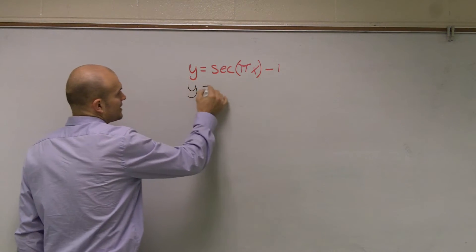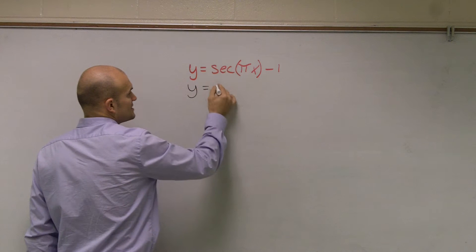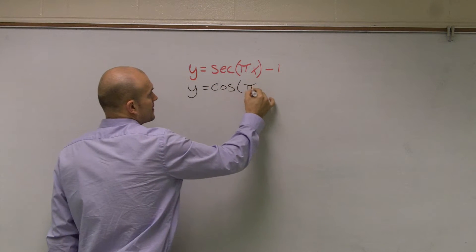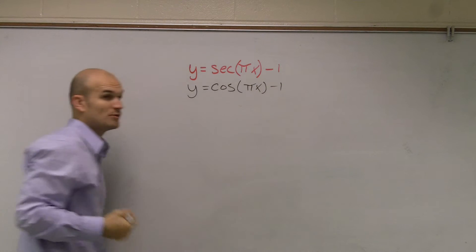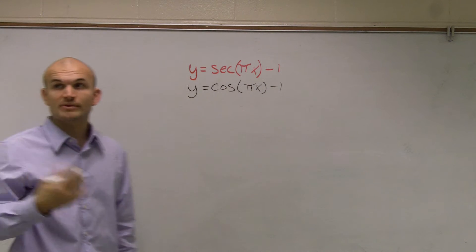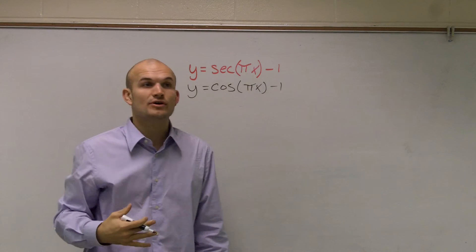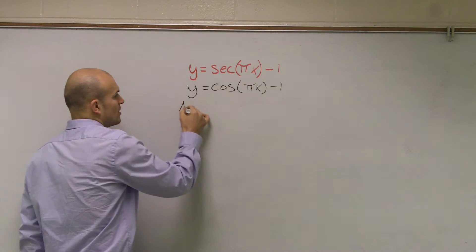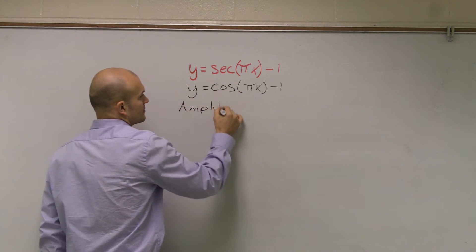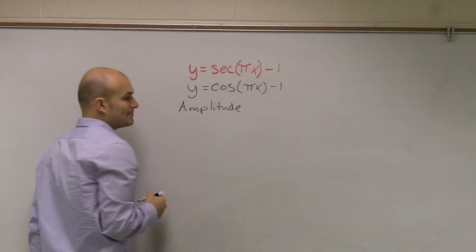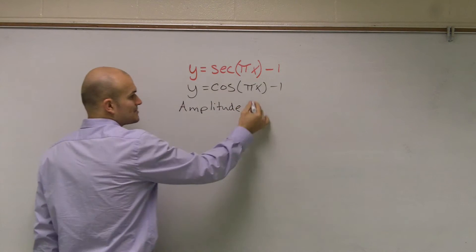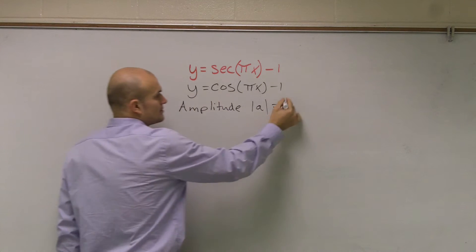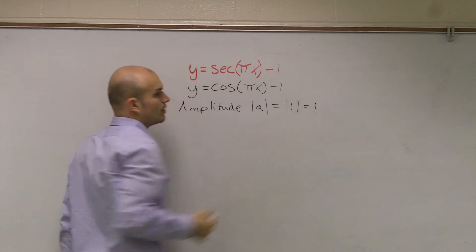So what we're going to do right now is totally forget that I'm graphing secant, and I'm just going to graph the reciprocal, which is cosine of πx minus 1. This is what we did in our previous chapter, so it's a little bit of review. Whenever we have a cosine graph, the first thing we want to do is find the amplitude. Amplitude is the absolute value of a. Here, a is 1, so the absolute value of 1 is 1.